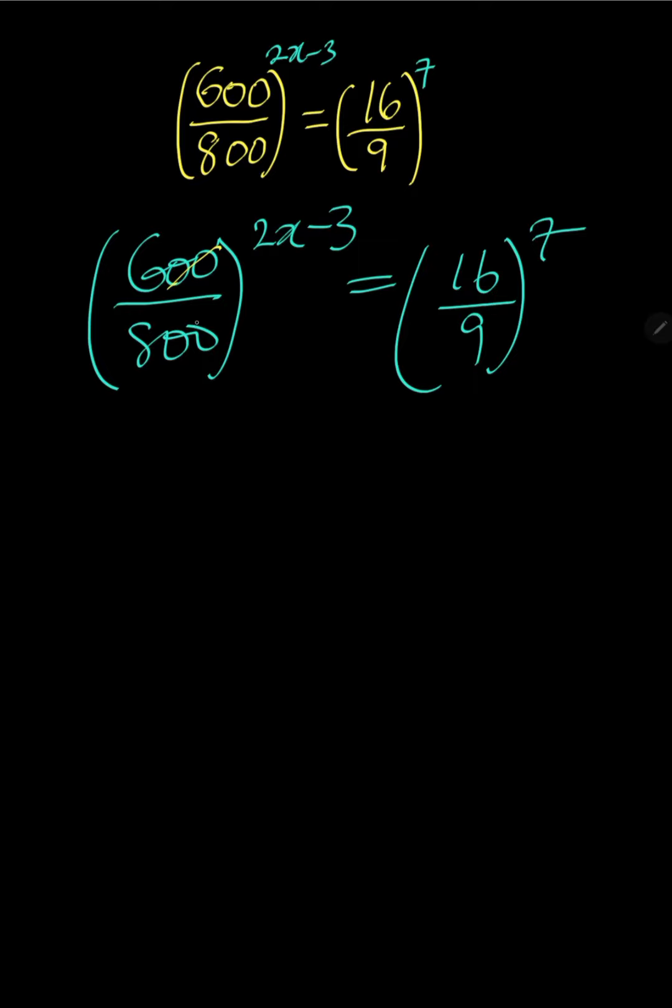Now these two zeros we cancel out. 2 we divide 6 to give us 3, and 2 we divide 8 to give us 4. So this is the same as saying 3 all over 4 all to the power of 2x minus 3.